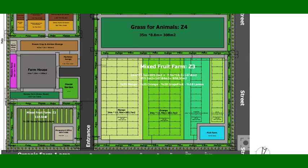Zone two is the fruit and vegetable areas. Zone three also has mixed fruit — 35 percent mango, 35 percent orange, 20 percent grapefruit, and 10 percent lemon trees. Inside zone three we also put a fish farm.